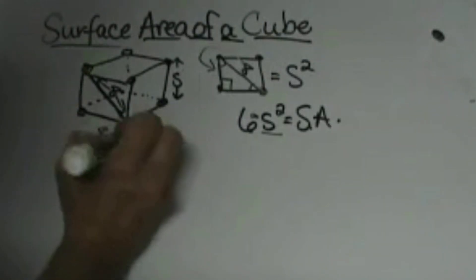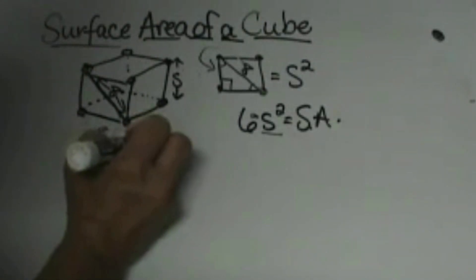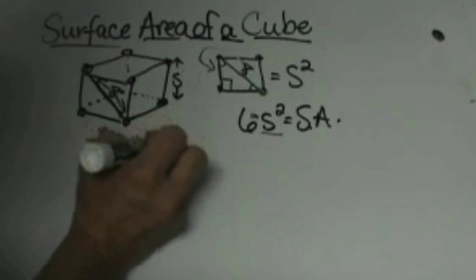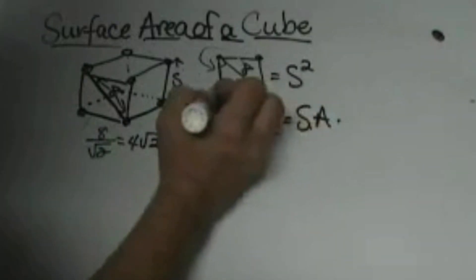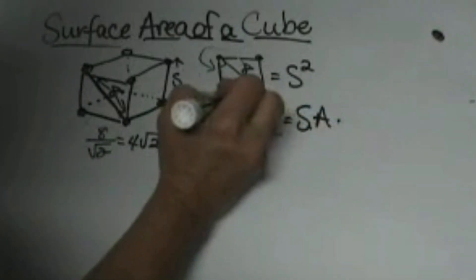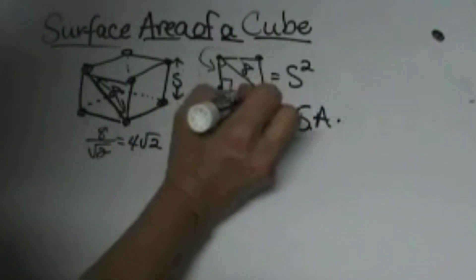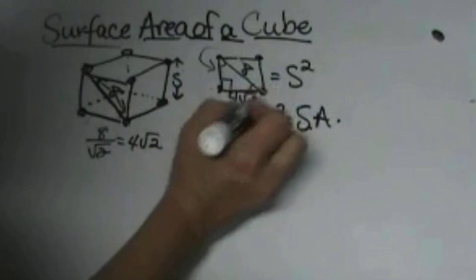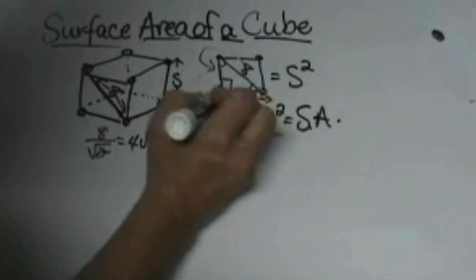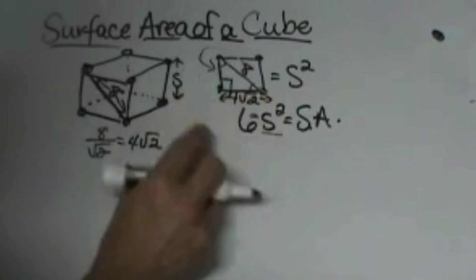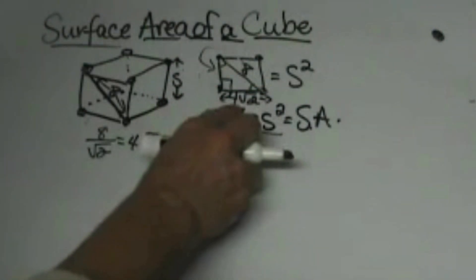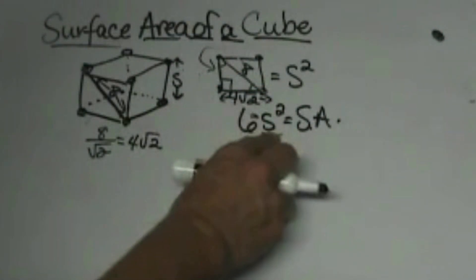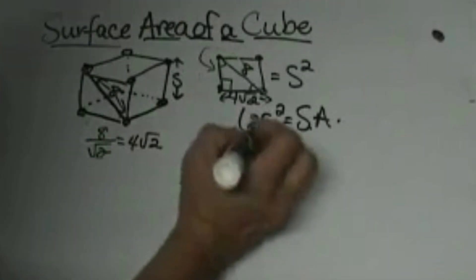So 8 divided by the square root of 2 is 4 square root of 2, and that gives me the length of the face. So the side is now 4 square root of 2. Now we can take that and plug it into our formula.